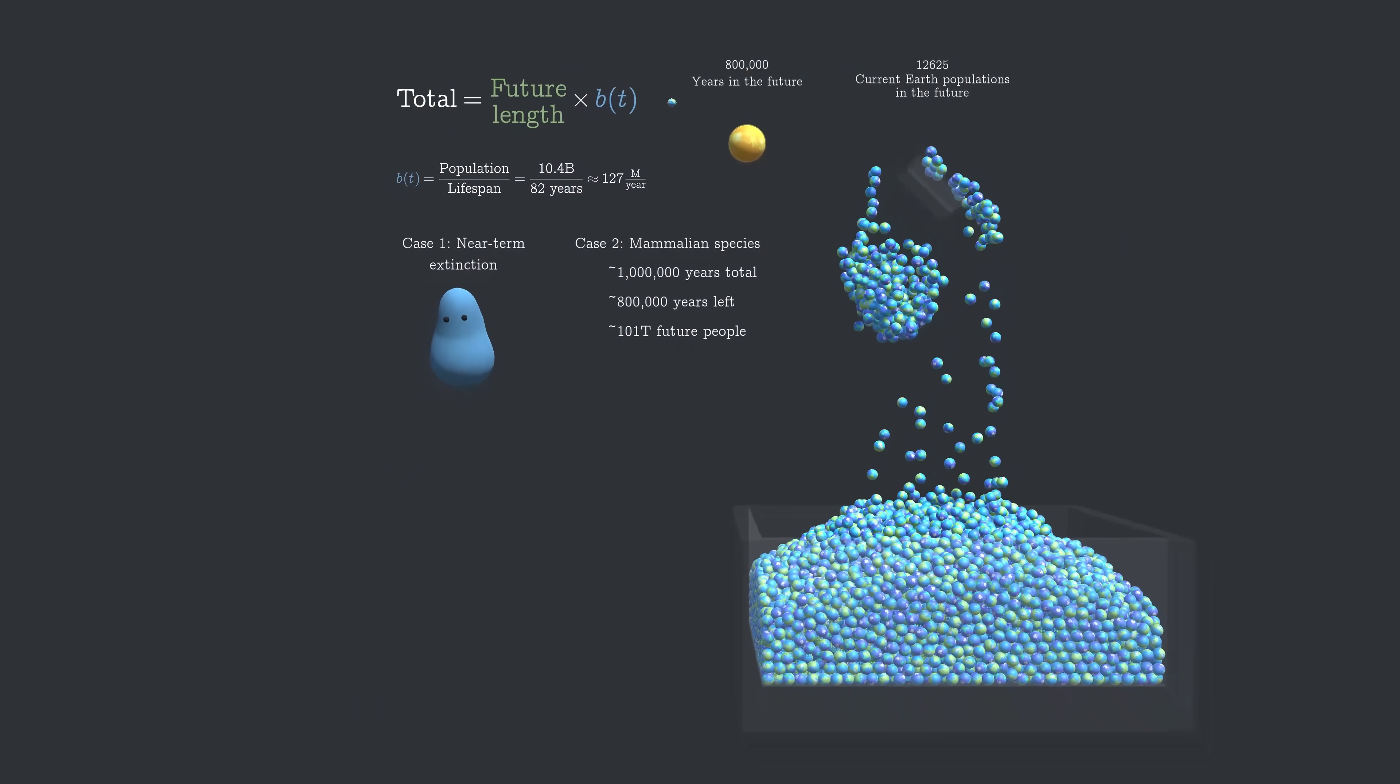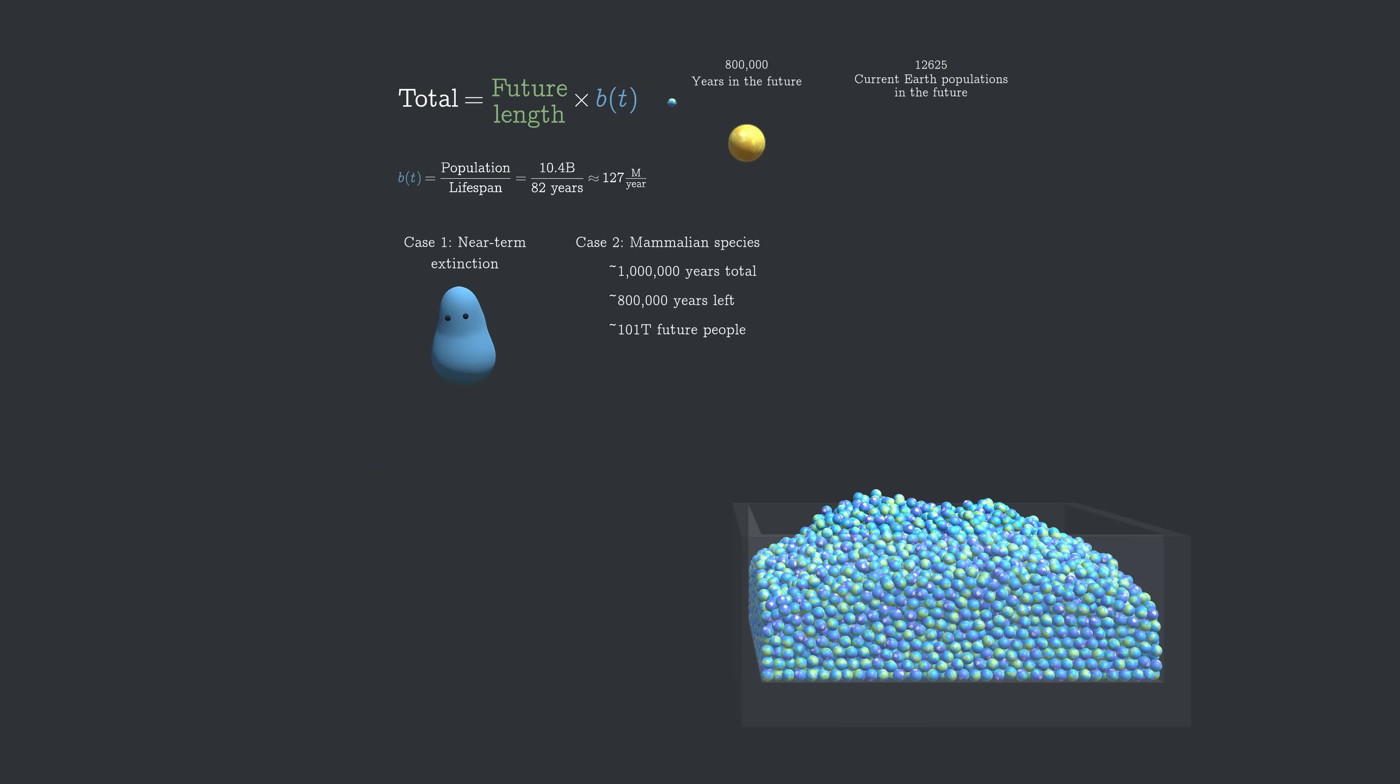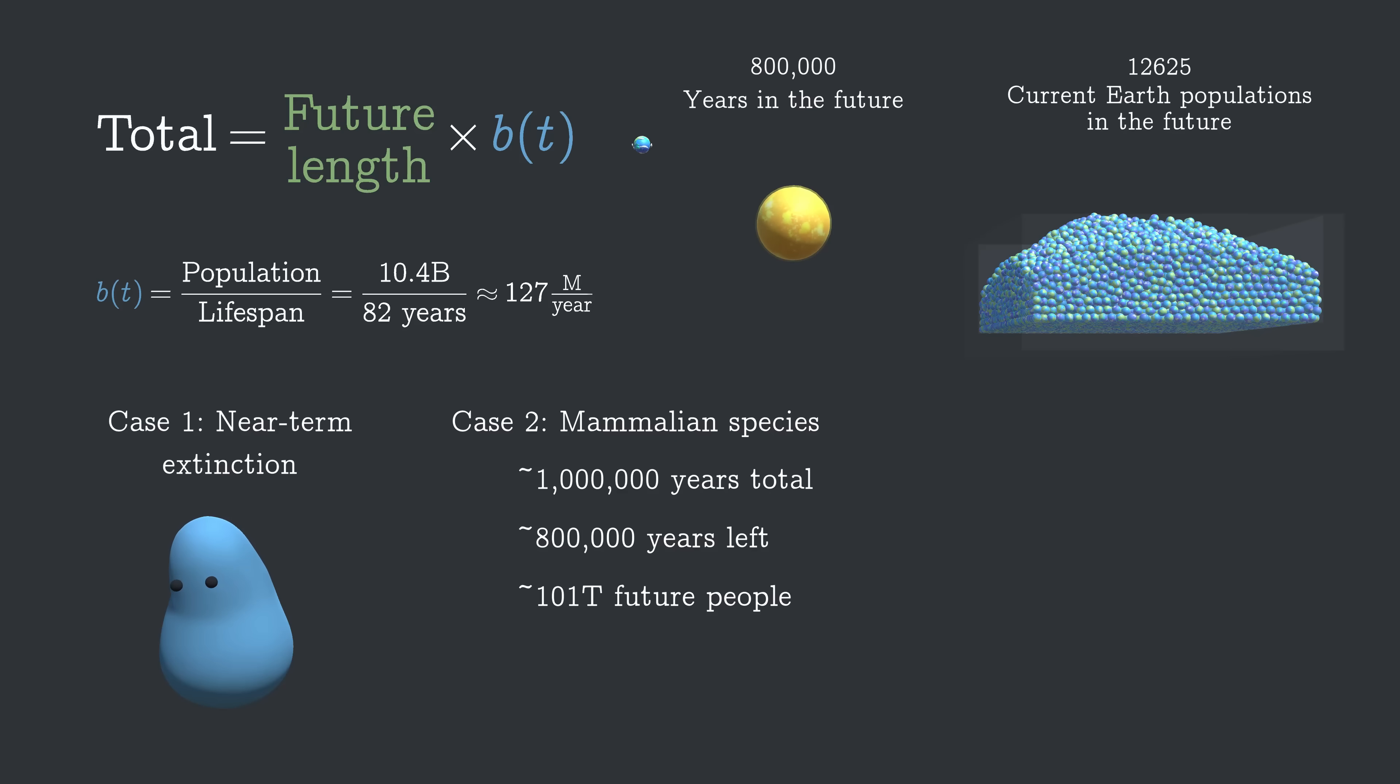That's 12,625 times Earth's current population. And with that total, the 117 billion people so far only account for about 0.1% of all people who will ever live.